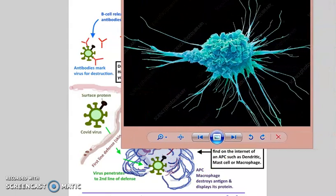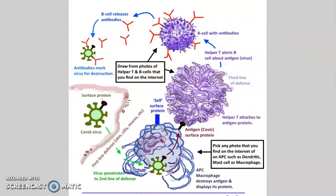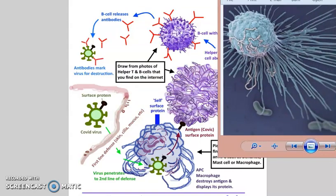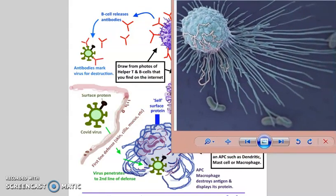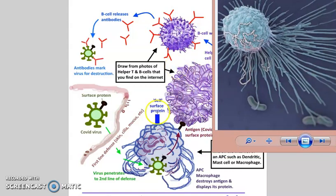There's dendritic ones. Wow, look at those arms. There's macrophages, mast cells. But I decided to settle on a macrophage, and that's what I drew. At least I attempted to draw it. I'm not an artist.